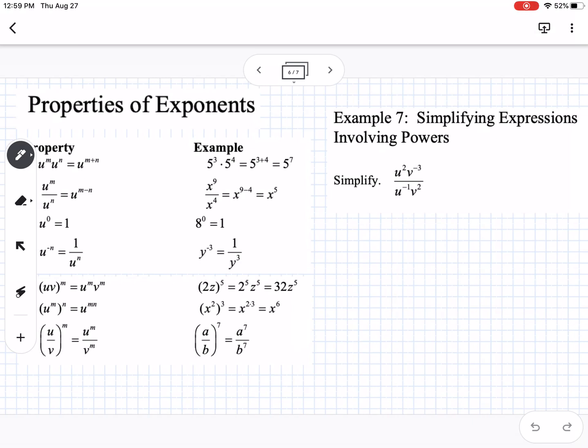For example 7, we have a couple different ways to do this. We have u on the top and bottom of the fraction. If we have a negative exponent, we move it to the opposite location to make it positive. u² is positive, so we keep it there, but v⁻³ we put on the bottom to make it positive. This u⁻¹ we move to the top and turn it to a positive exponent, and v² stays on the bottom because it's already positive. Since we have multiplication, we can add the exponents. This gives us u³ over v⁵.